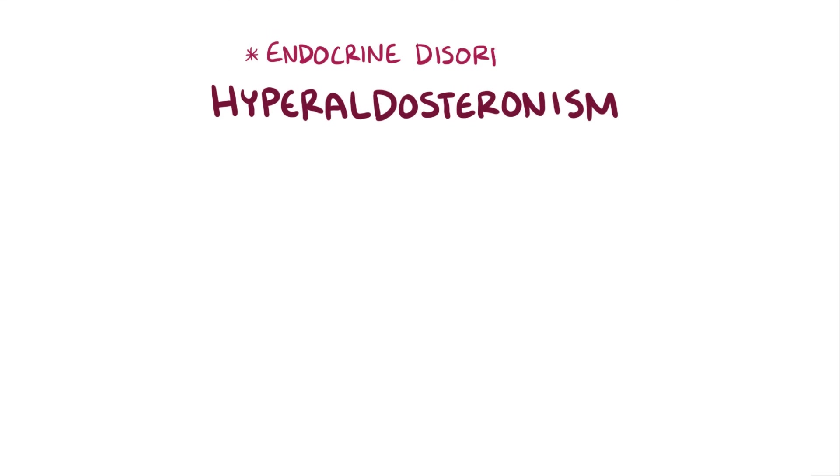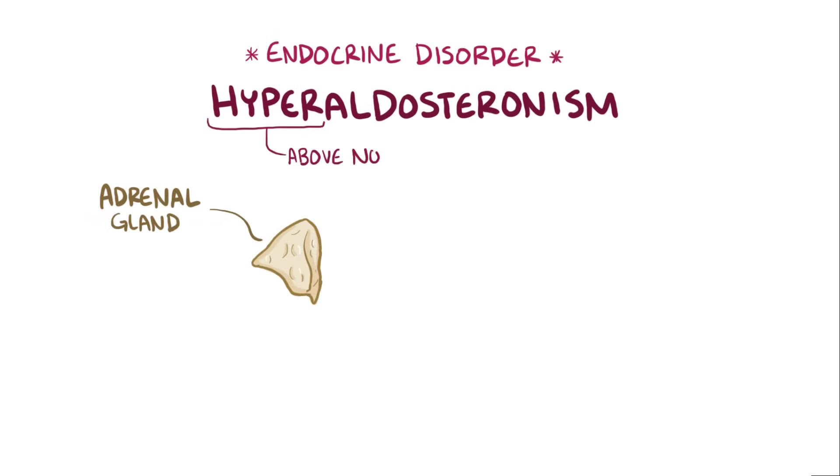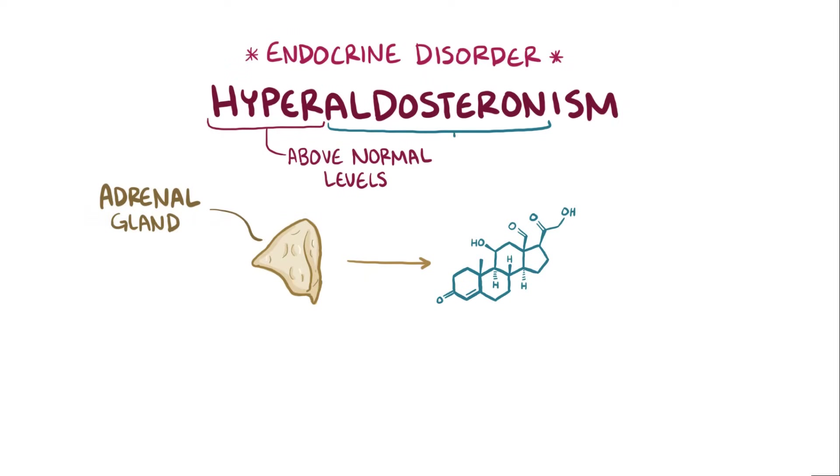Hyperaldosteronism refers to an endocrine disorder where the adrenal gland produces above normal levels of the hormone aldosterone.